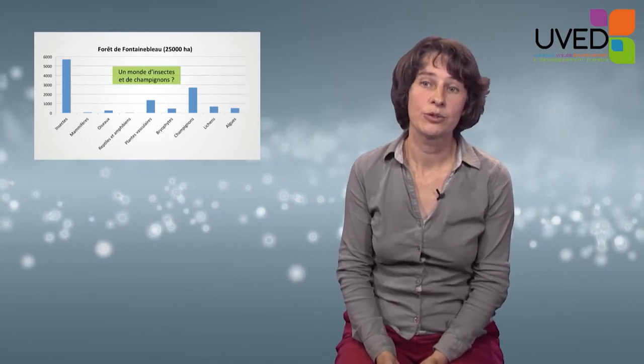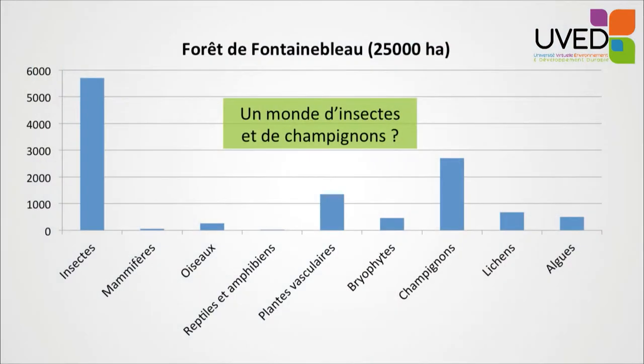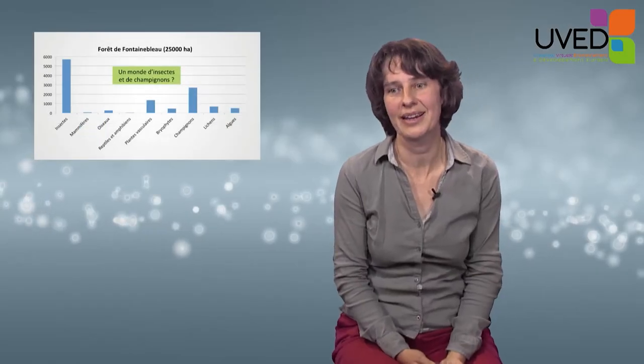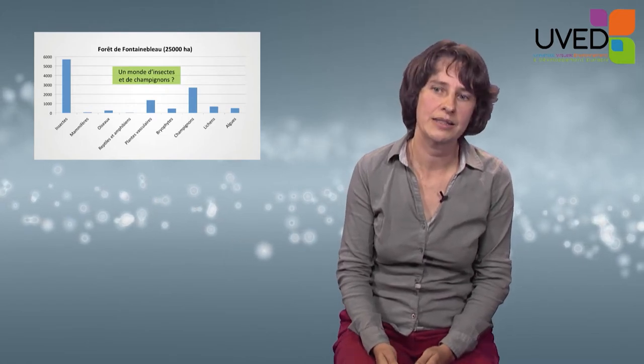As a first example, take the Fontainebleau forest near Paris. It is very rich in species of insects — 5,700 species — as well as mushrooms and fungi, with 2,700 species, and vascular plants. There are also 500 species of algae, which is something we wouldn't have thought of, and yet it is the case in the Fontainebleau forest.